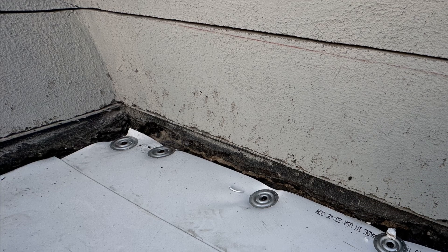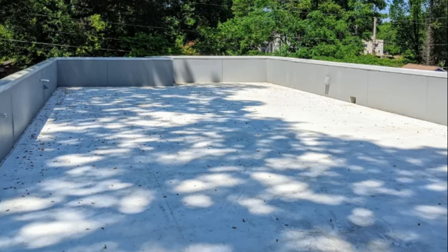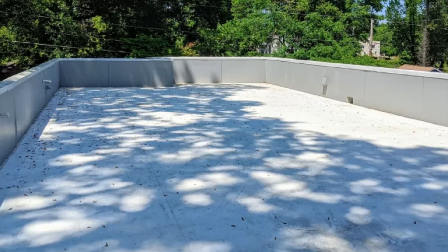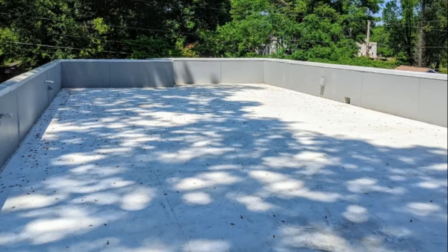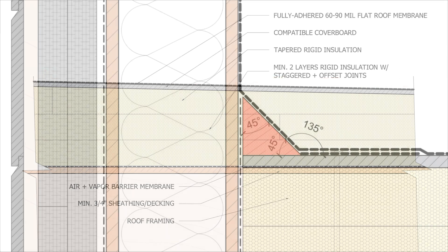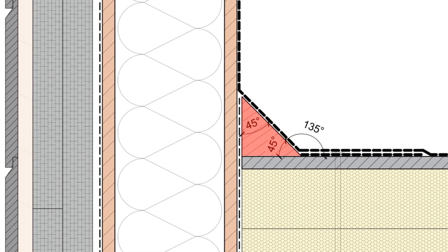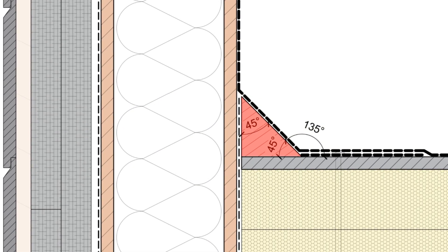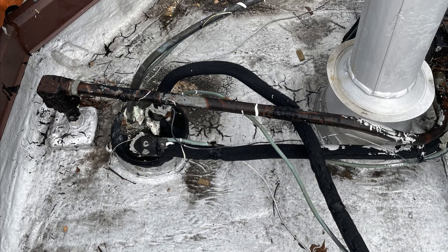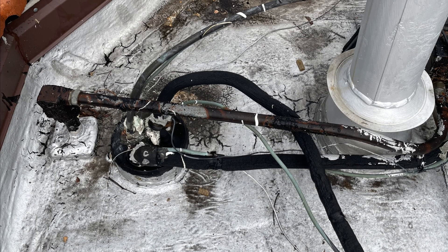We also tend to see leaks at the corner transition from the roof membrane to the parapet wall, as that 90-degree angle can place a lot of stress on the membrane, especially when the membrane tends to expand and contract with fluctuations in surface temperature. We want to use a cant strip or a tapered edge strip to transition the membrane using a more shallow angle to reduce those stresses that could cause a tear or failure at that seam.